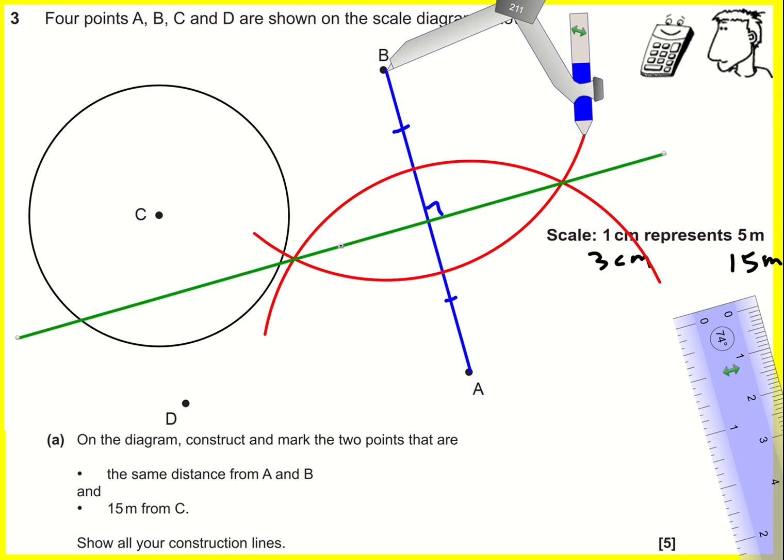It is the line where this point here is the same distance away from B as it is from A.